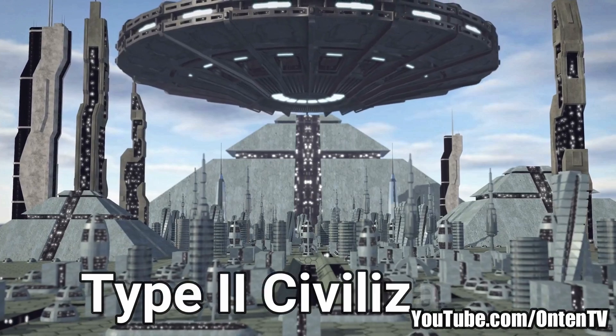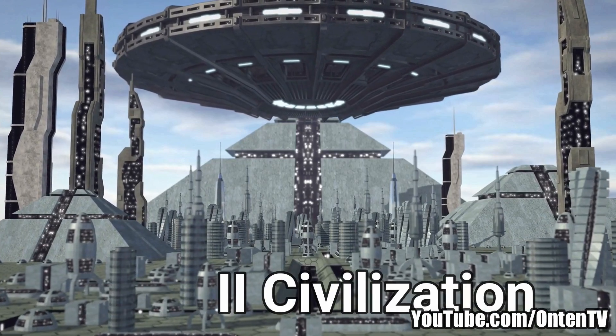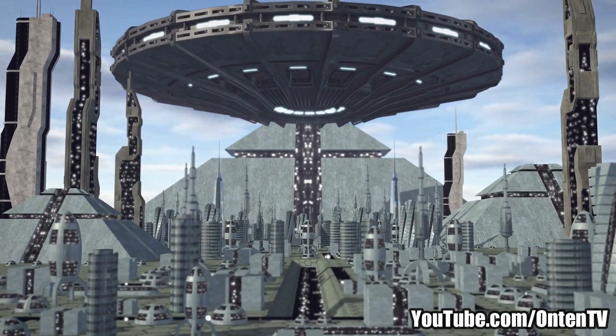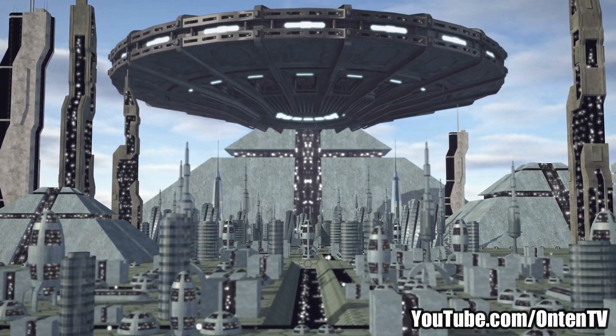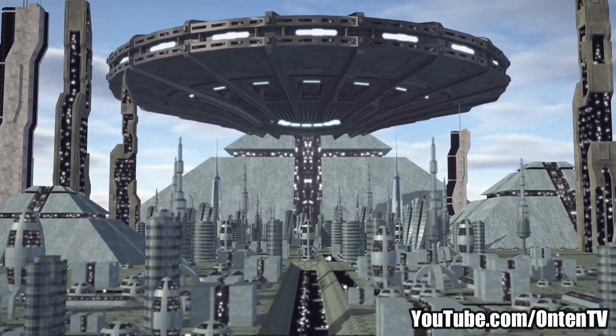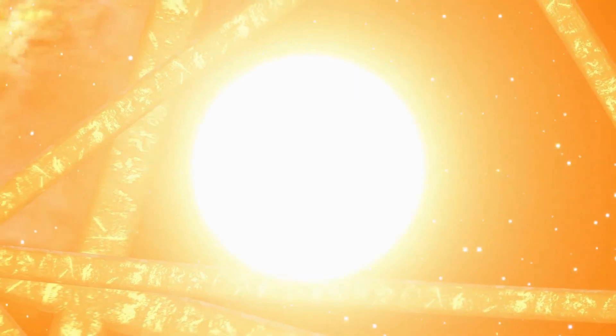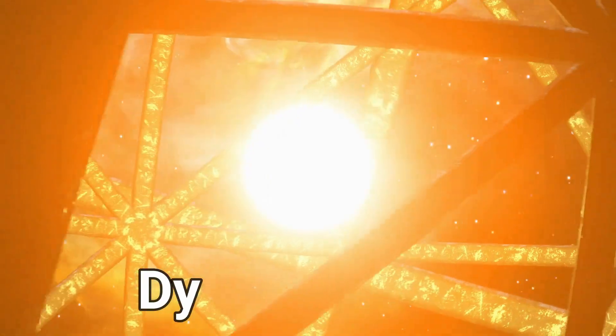The next one is a type 2 civilization. This civilization is a lot more advanced than type 1. These creatures can harvest 100% of the energy of their star, and the idea they have is they use a Dyson Sphere.